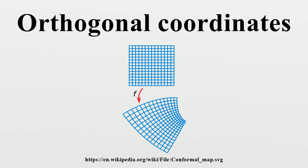Cross product: The cross product in 3D Cartesian coordinates is well known. The formula remains valid in orthogonal coordinates if the components are calculated in the normalized basis. To construct the cross product in orthogonal coordinates with covariant or contravariant bases, we again must simply normalize the basis vectors. A more compact notation for the cross product, which simplifies generalization to non-orthogonal coordinates and higher dimensions, is possible with the Levi-Civita tensor, which will have components other than zeros and ones if the scale factors are not all equal to one.